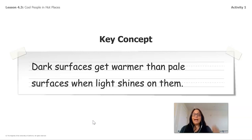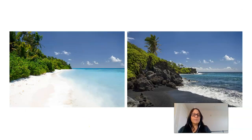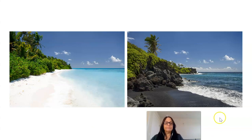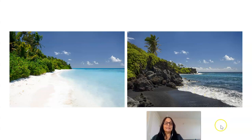Here we have a beautiful picture of a beach. One beach is lighter and the other beach's surface is darker. So one surface is pale—the one on the left side is pale—and the surface on the right side is dark.